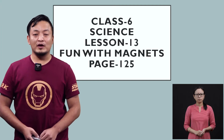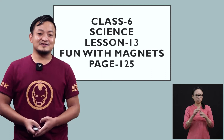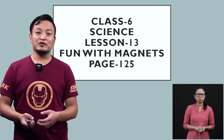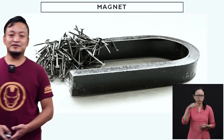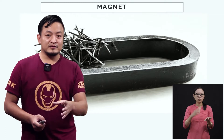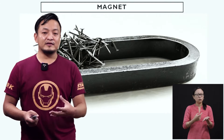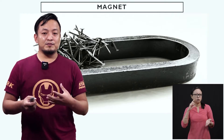So you can all turn to page 125. This is going to be a very interesting lesson because we are all familiar with magnets. When you were a small kid, you played with magnets. So a magnet is something that attracts iron, cobalt, and nickel. Magnet attracts iron, magnet attracts cobalt, magnet attracts nickel.